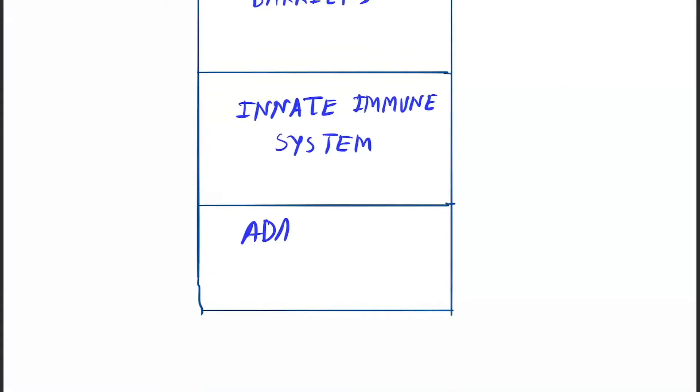So first one is barriers. Next is second grade, that is innate immune system. And the last one is adaptive immune system.